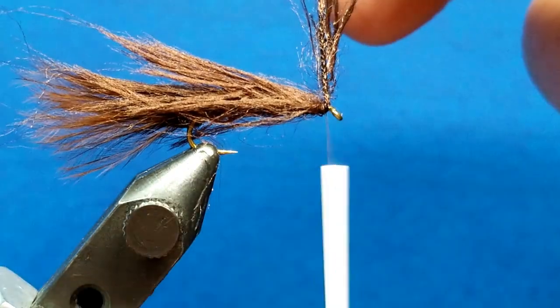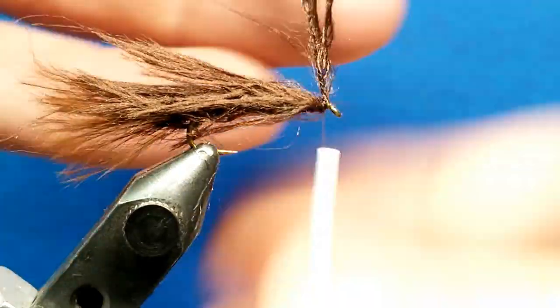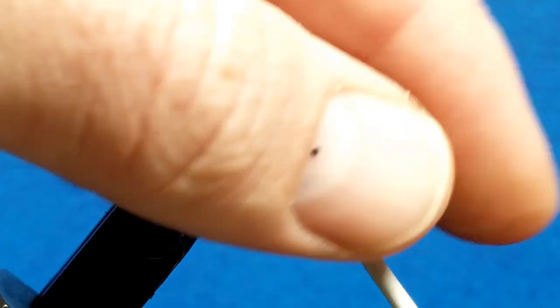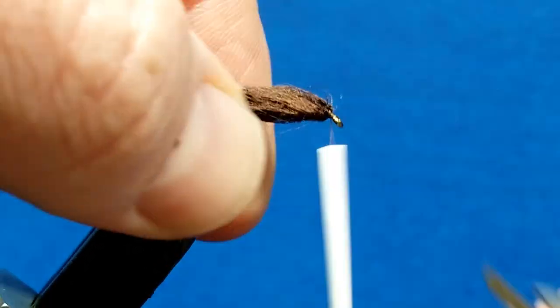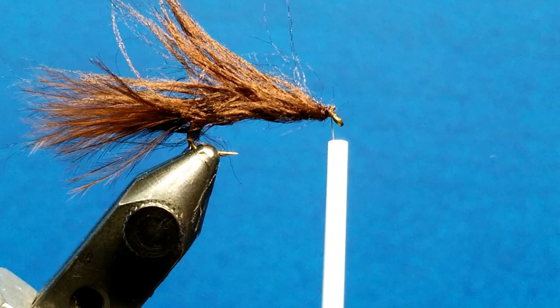Brush that back and just wiggle the thread through there. Stick the nose of the bobbin right up in there. Take two or three wraps to lock it down and snip off the excess.